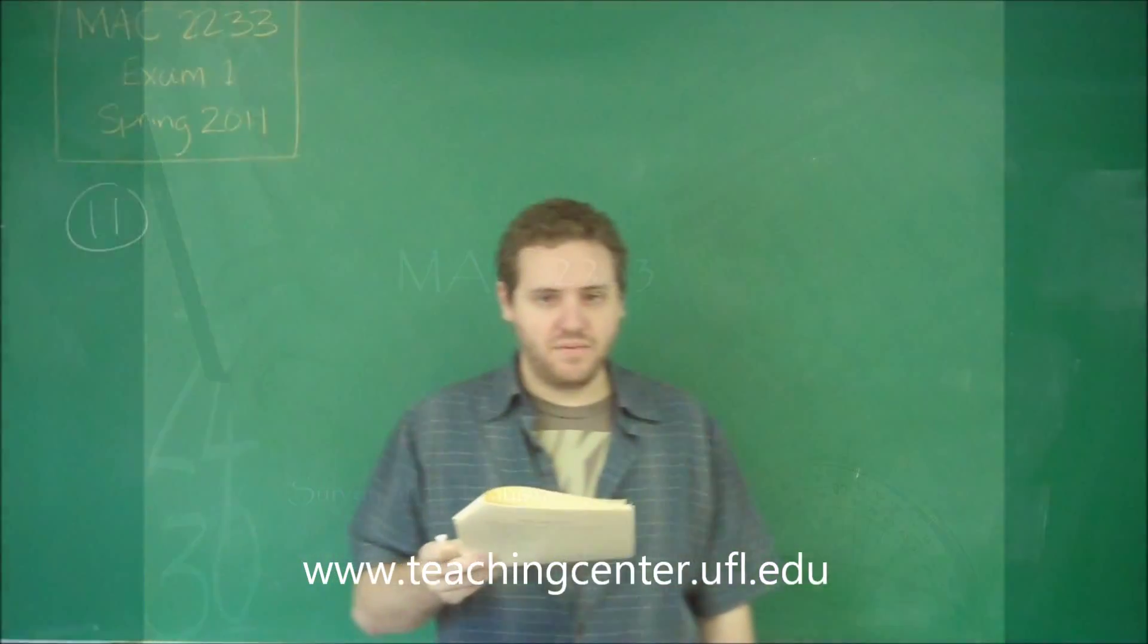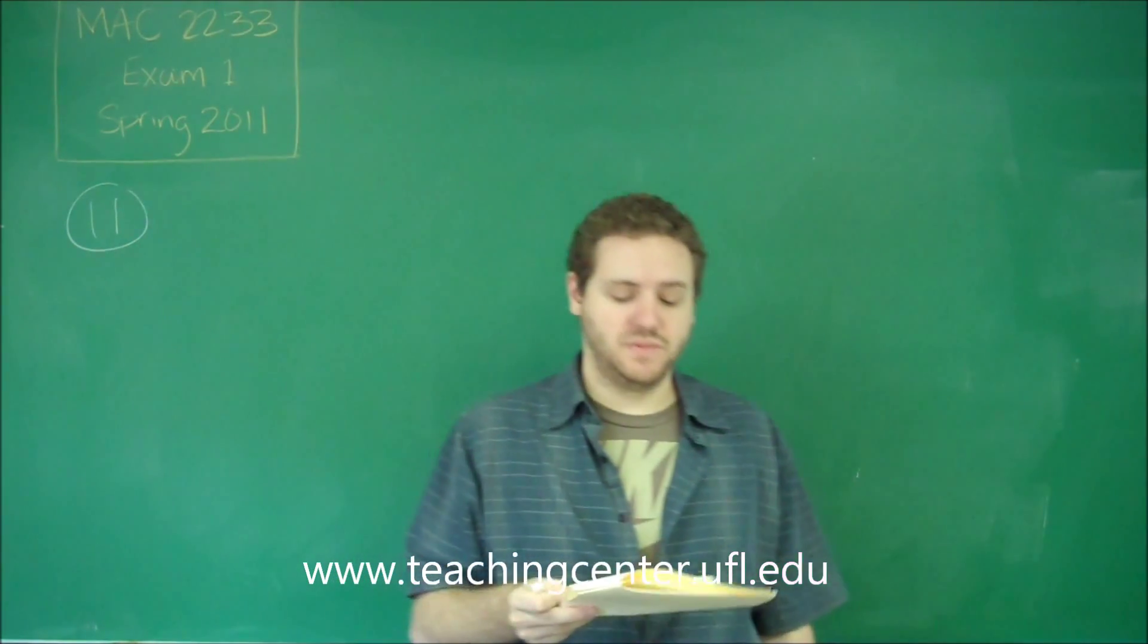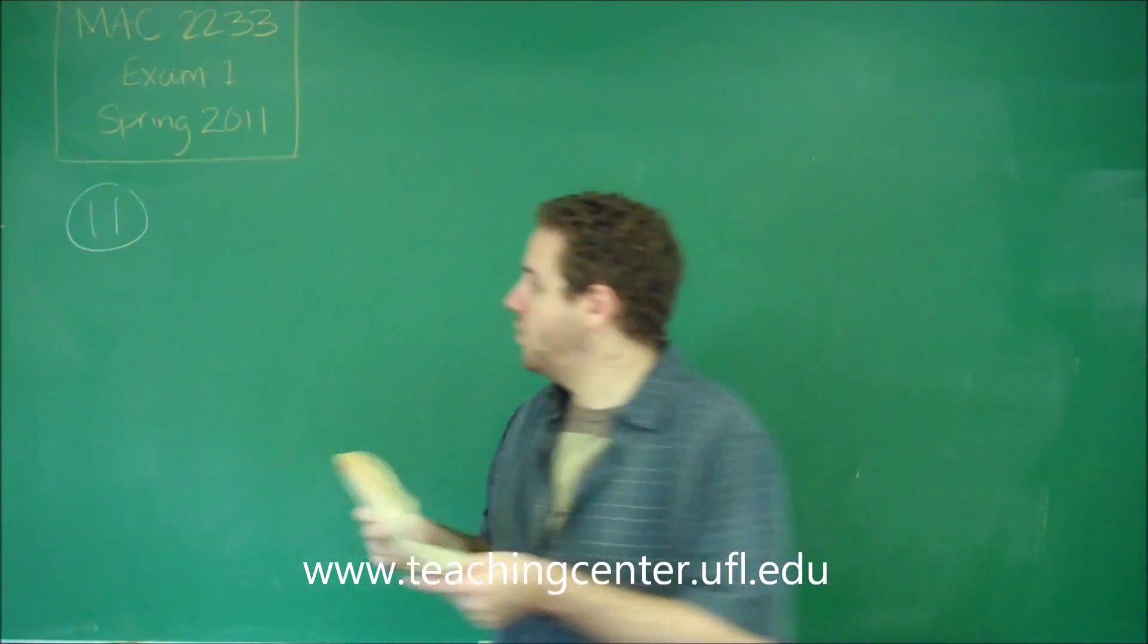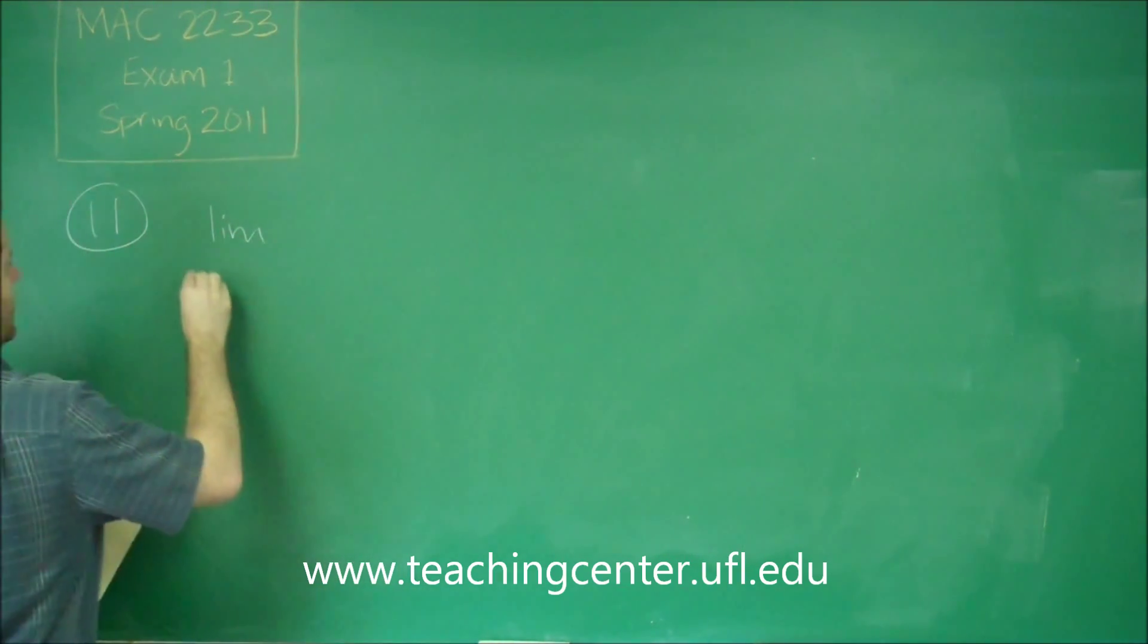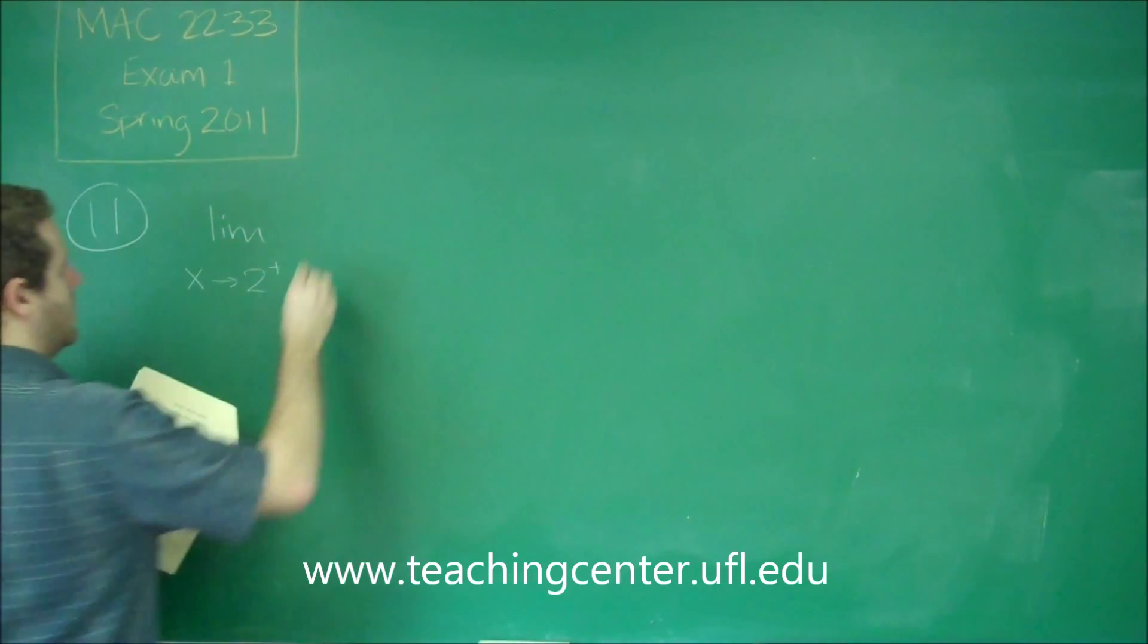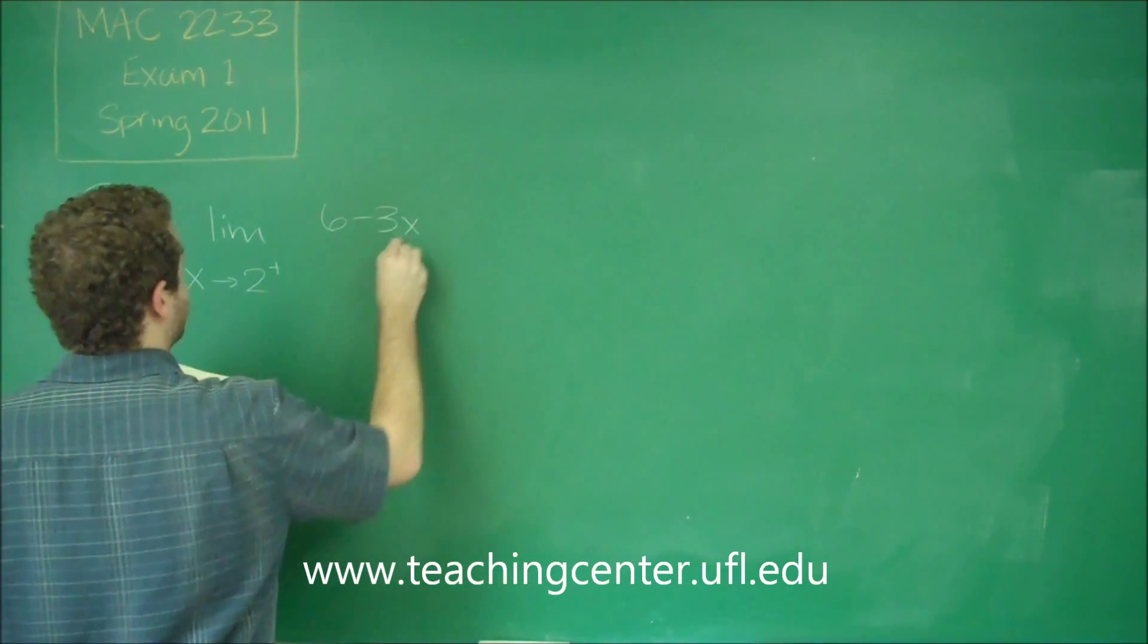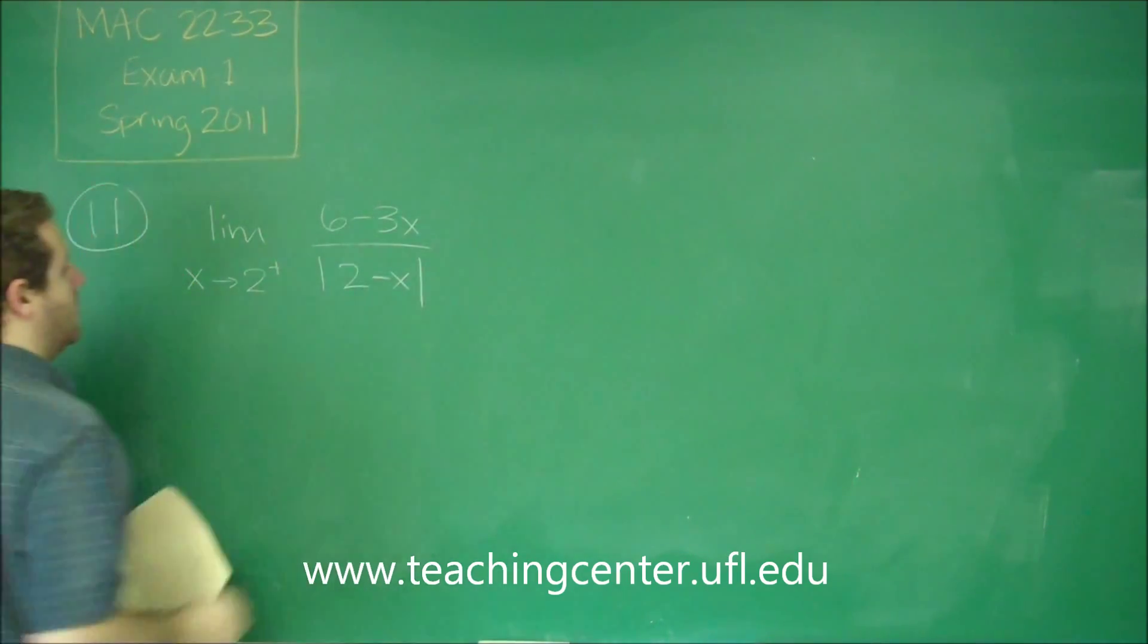So for number 11, we have a limit problem where we're dealing with absolute values. This is something a little bit different than the limit problems we've done before. And we're only doing the limit from one side as x approaches 2 from the right. We have the function 6-3x over absolute value of 2-x.